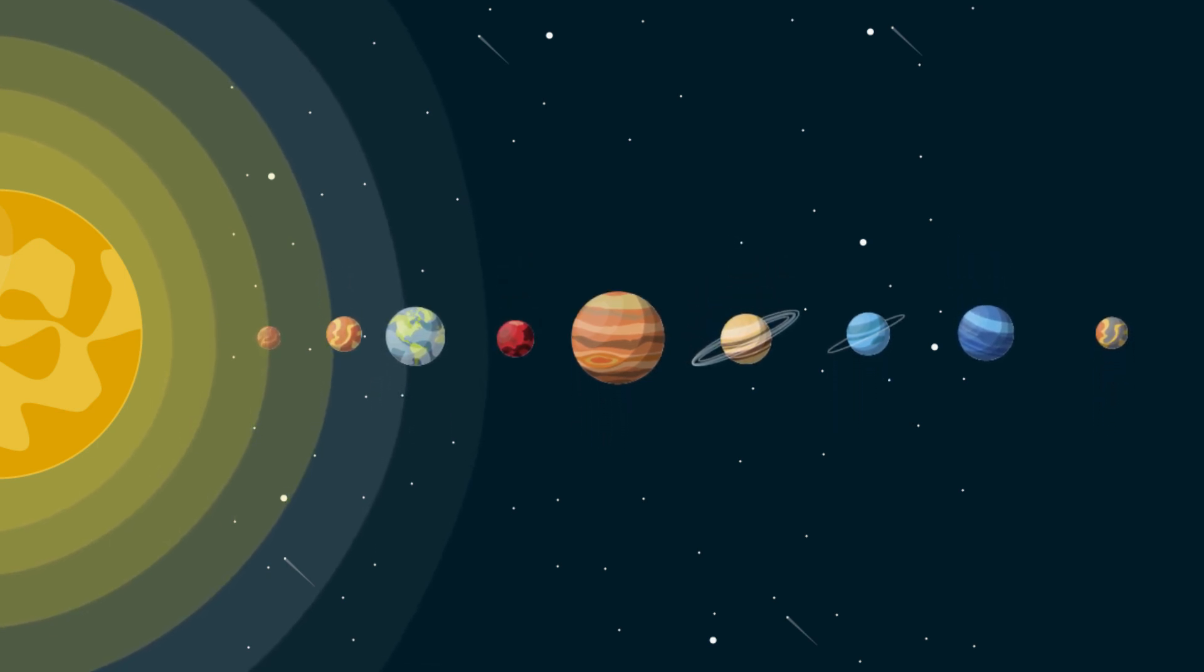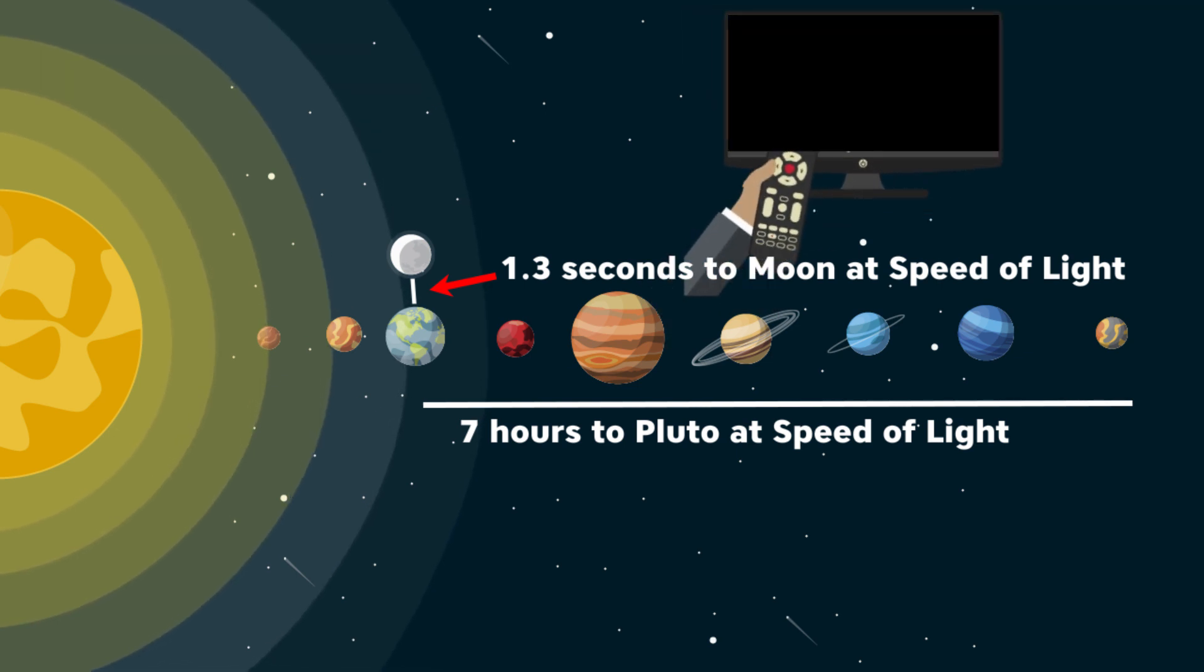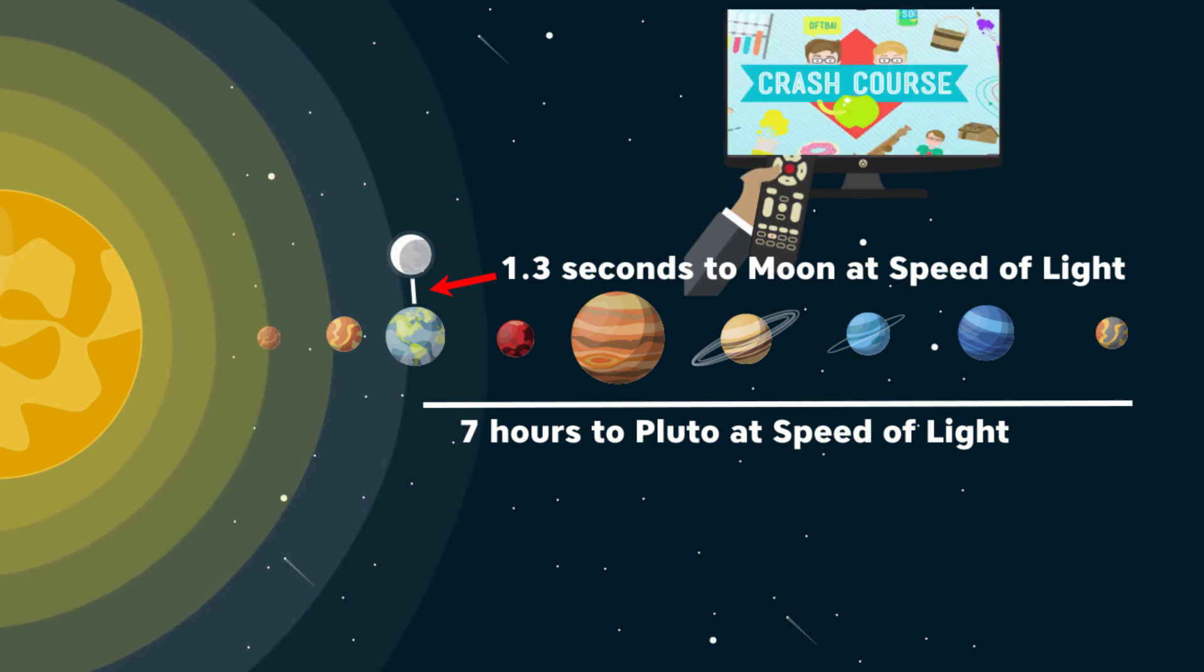Even at the speed of light, it will take about 7 hours to get to Pluto. The closest celestial object to us is our moon, and that's 1.3 light seconds away. To put it into perspective, the distance to the moon from the Earth is like when you change your channel on TV. It's going to take one second, and this one second is the greatest accomplishment of human in the history.